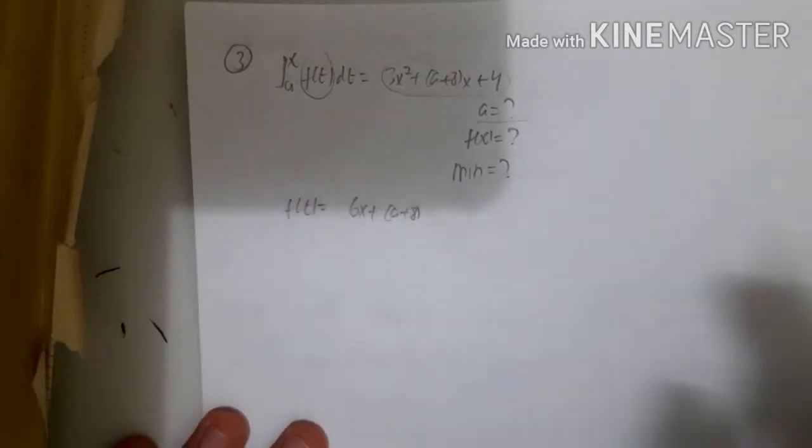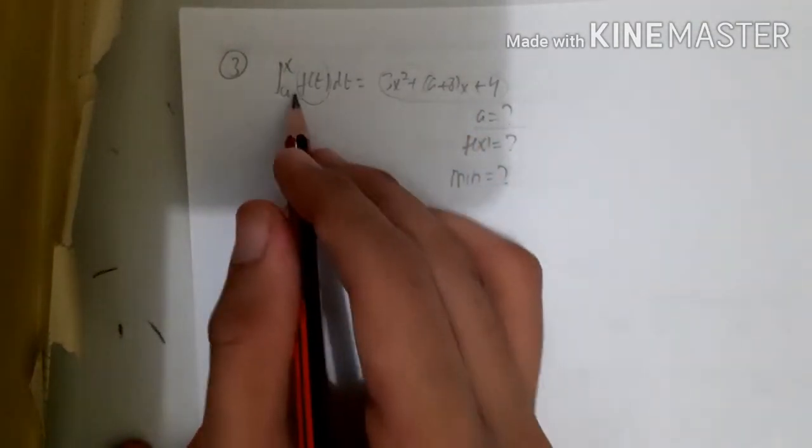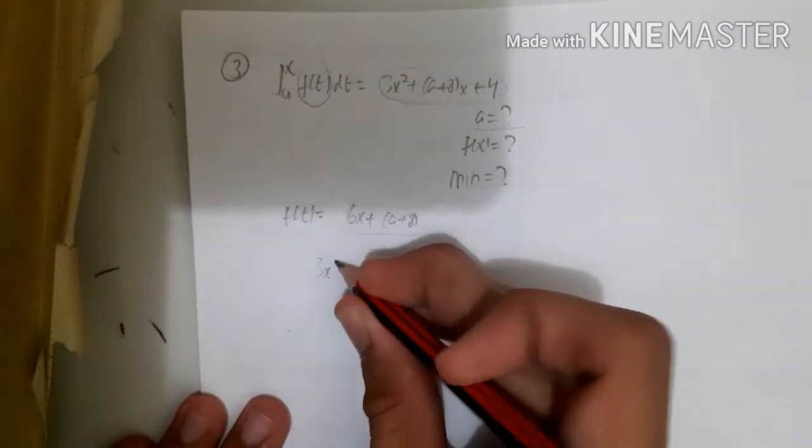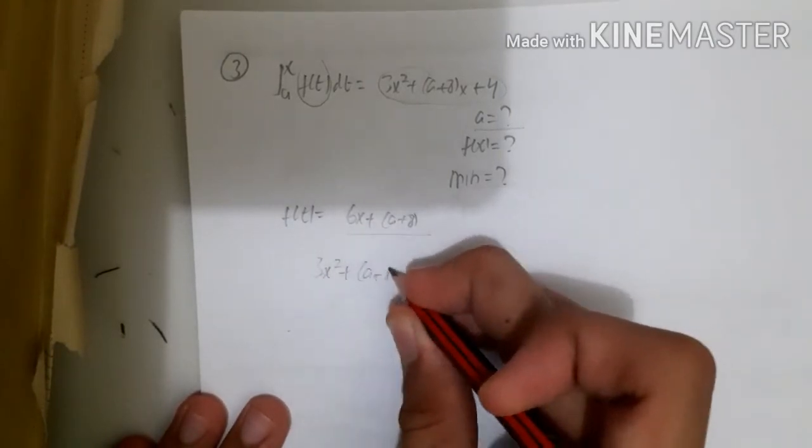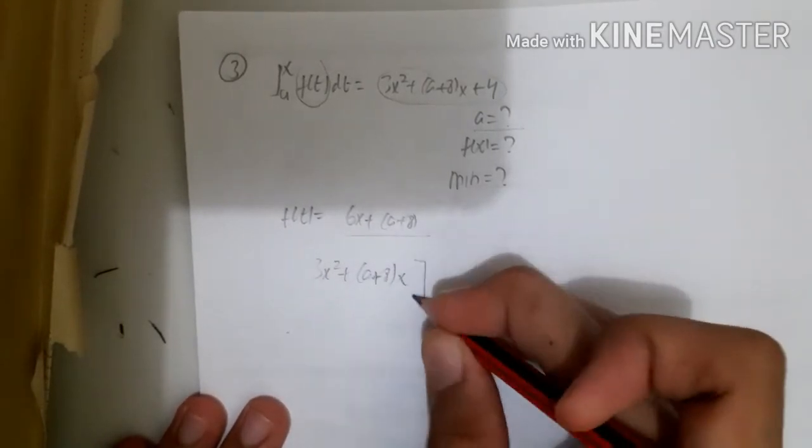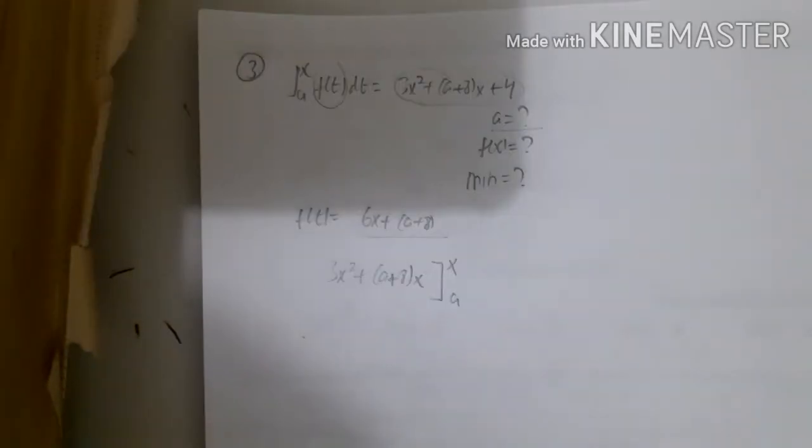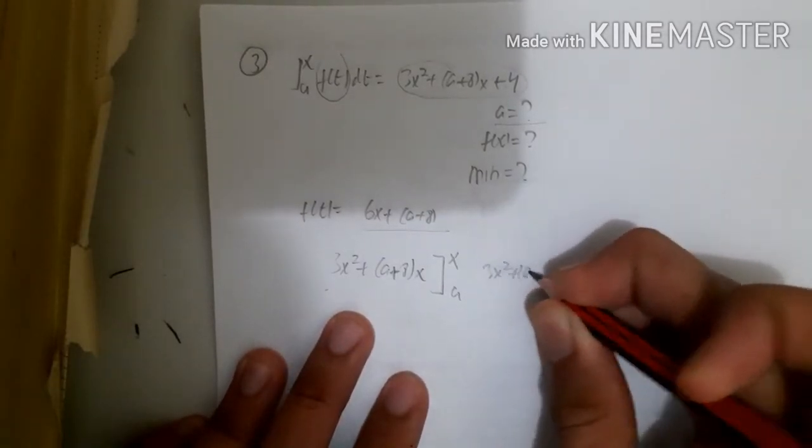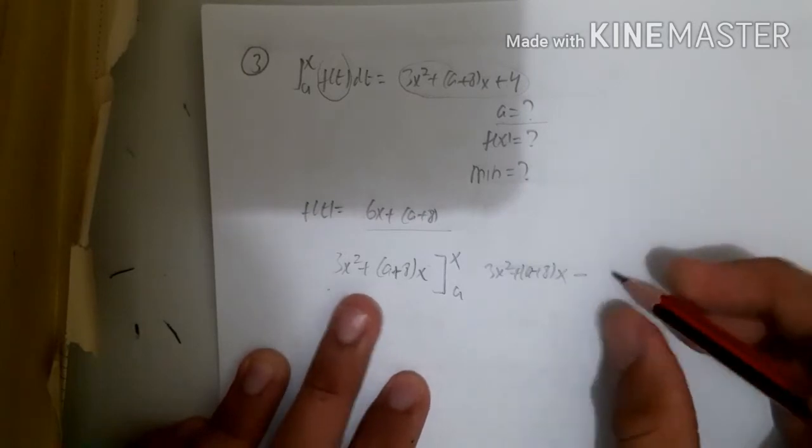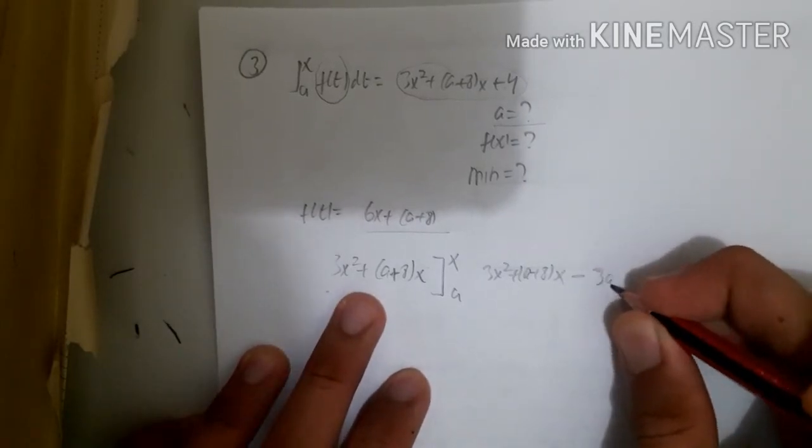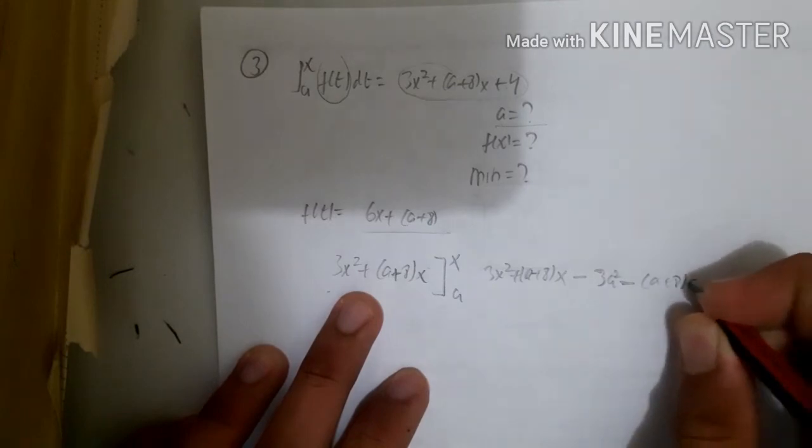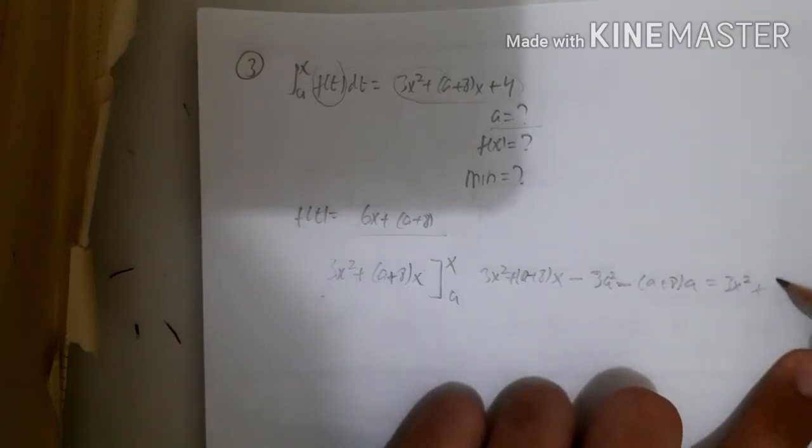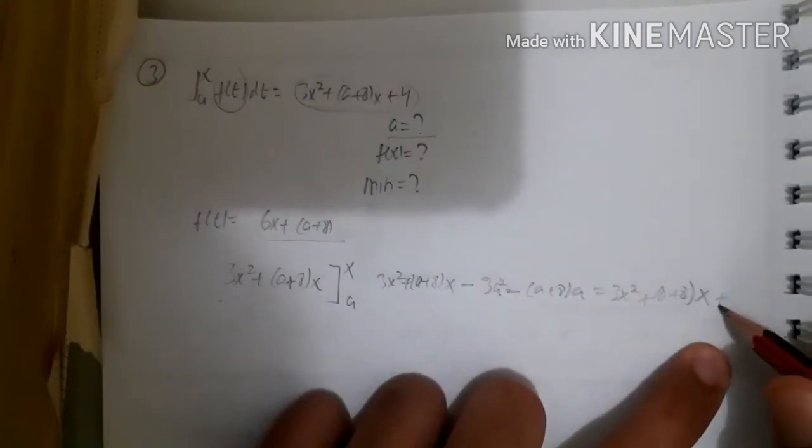Now the trick is we integrate back but we apply the limits of a to x. So let's integrate this back: 3x² + (a+8)x, and then minus when we put in a: 3a² + (a+8)a. And this value will be equal to 3x² + (a+8)x + 4.